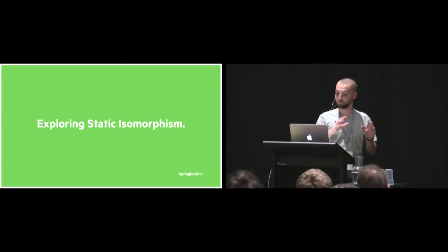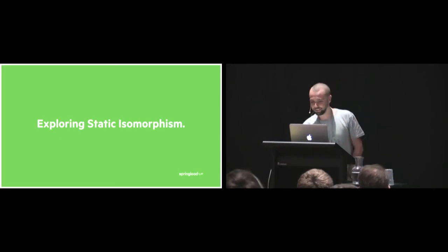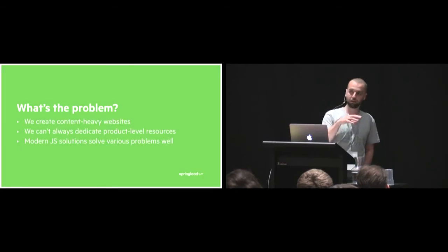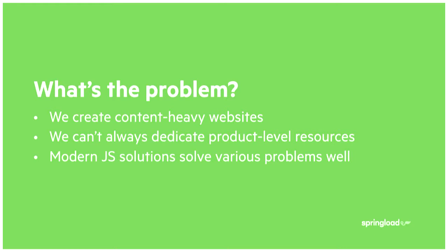I'm not going to go into the debate about isomorphic or universal naming — it's a catchy title. We'll talk about why I've arrived at this, the process that's taken me here, and what problem I've been trying to solve. At Springload, we create a lot of content-heavy websites. We do a lot of information architecture and user experience work, but we can't always dedicate resources like you would for a specific product. We like the solutions that modern JavaScript tooling offers — style guides and reusable components using React or Vue — but find it difficult to get into our workflow, so we've been investigating tools and architectures to squeeze these in.